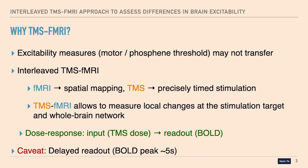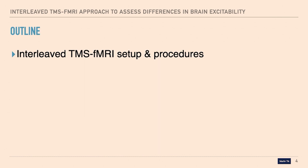There is also one disadvantage of interleaved TMS-fMRI compared to other methods such as electrical signal methods, because what we are actually reading out is the BOLD response, which is delayed by five seconds. It likely sums up afferent and efferent signals, and it's hard to disentangle them — that's something to keep in mind.